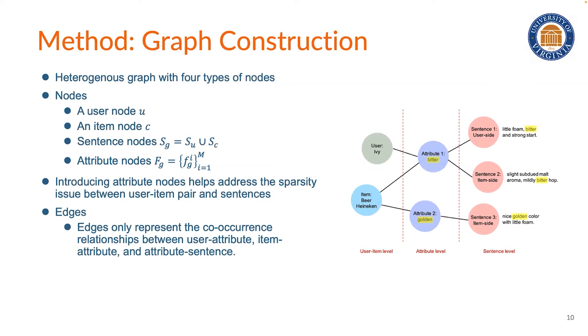So first, to address the sparsity issue between user-item pair and sentence, we introduce attributes as a bridge to connect user-item and sentence. We construct a heterogeneous graph with four types of nodes. Specifically, each user-item pair corresponds to an individual graph.